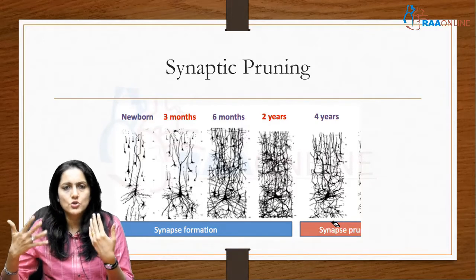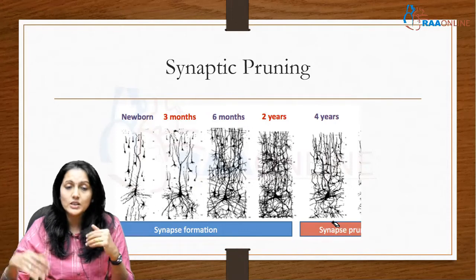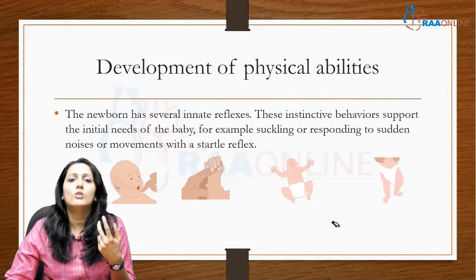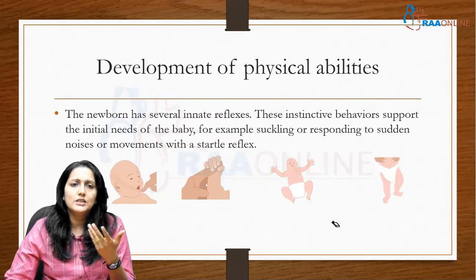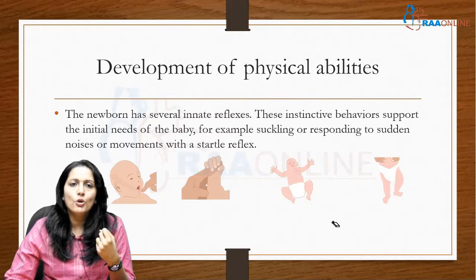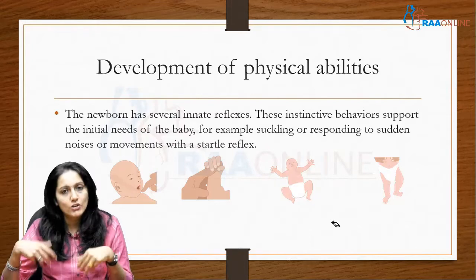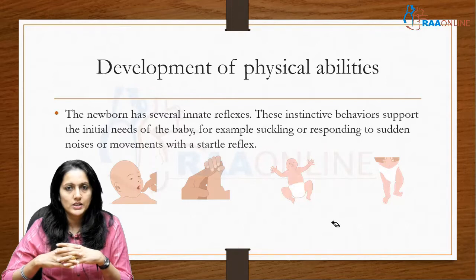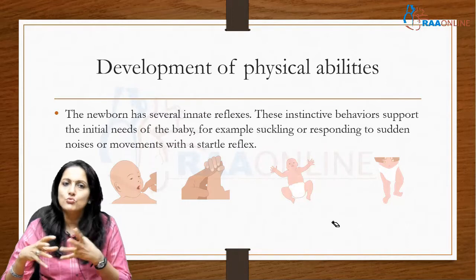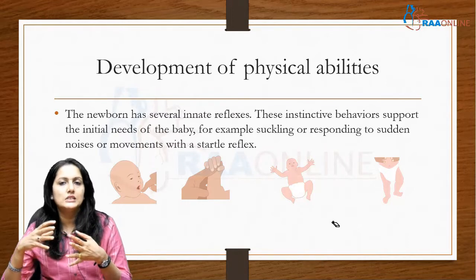This is how children basically develop in terms of achieving their cognitive milestones and information processing. In terms of physical abilities, a newborn will naturally have a lot of reflexes, and these are biological and naturally acquired, due to the various physiological developments that occur in the body.